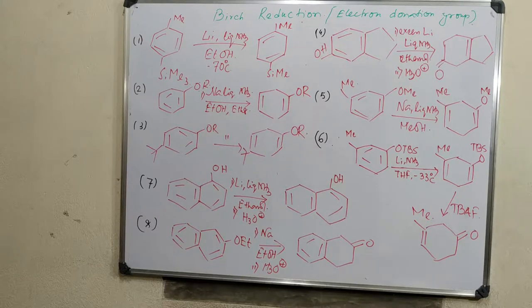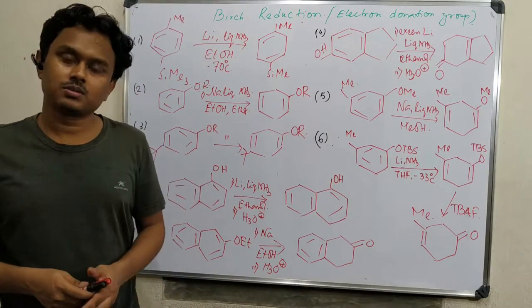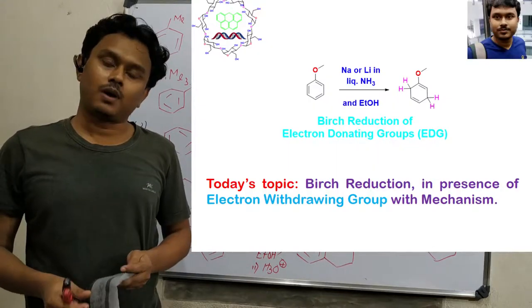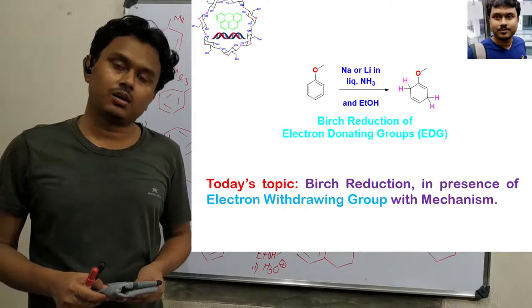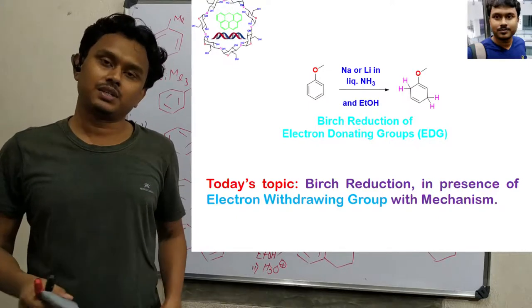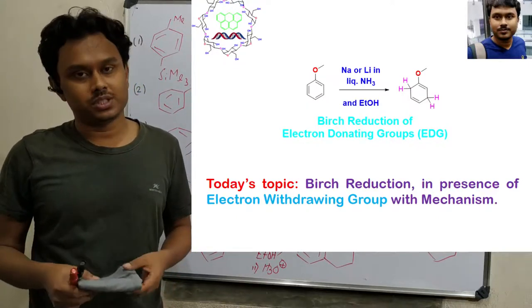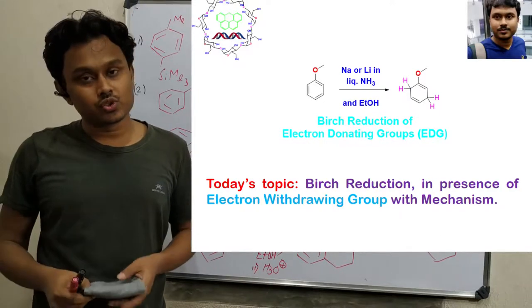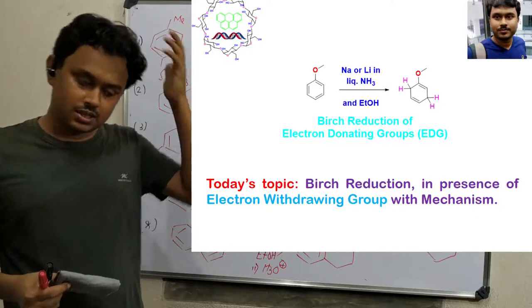Welcome friends, I am Tonmar. I welcome you all in my channel Chemistry and History of Molecules. This is a continuation lecture of Birch reduction. The first part I have uploaded describes the basic reaction mechanism of Birch reduction and the reactivity of alkyl-substituted benzene moieties. Here I am going to explain about the electron-donating group attached to the arene moiety. So let's start.